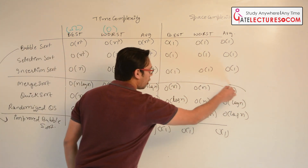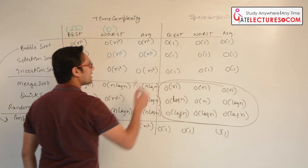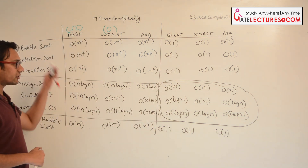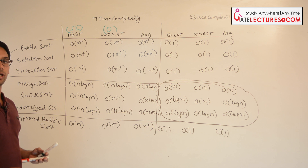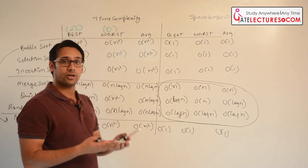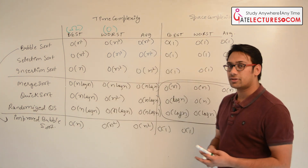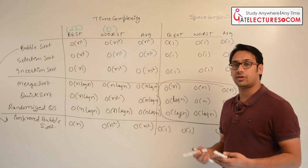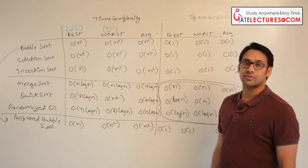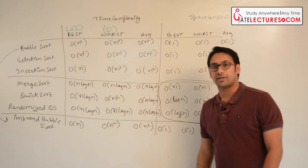You can see that some sorting algorithms take more space compared to others. All these sorting algorithms are comparison-based, meaning we compare two items. Some sorting algorithms are not comparison-based — for example, radix sort and bucket sort are not comparison-based sorting algorithms, but the ones we've discussed here are.